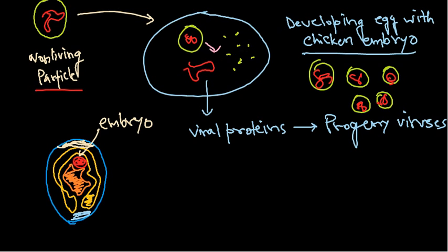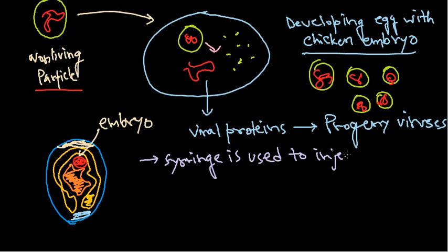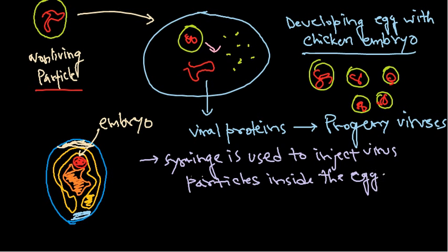For culturing viruses inside the embryo, the only way of injecting is via a syringe. A syringe is used to inject virus particles inside the egg. We take the virus particles inside the syringe and inject them into different layers and different regions of the egg.